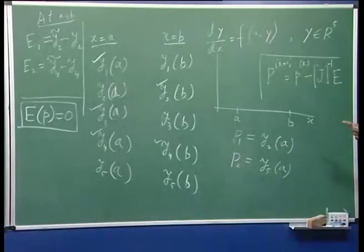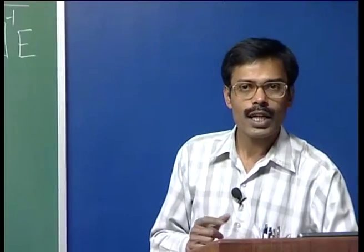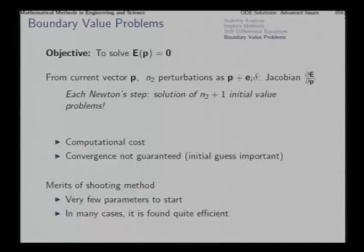The shooting method has the advantage that it requires very few parameters — only n2 variables — to start shooting. The disadvantage is that there is no guarantee of convergence and the method is very sensitive to the initial guess. If the initial guess is far away, iterations may go anywhere — a typical drawback of Newton's method. On the other hand, it is a good method to try first. If it works, you have your solution. If not, then a more sophisticated method can be tried: the finite difference method.